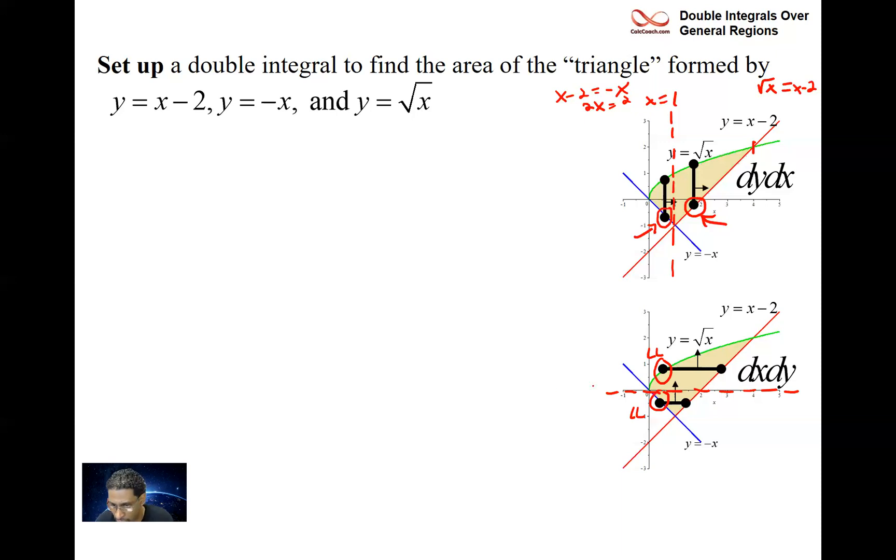What are your x's that make that happen? These lines intersect when y is negative one, when x is one, y is negative one. We already found the x value there. So we'll go from negative one to zero, and then we'll go from zero. And then when x is four, y is equal to two. Both dx dy and dy dx require two double integrals. Let's talk about how we set it up.